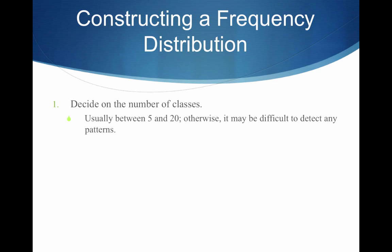How do we go about constructing a frequency distribution? Step 1 is to decide on the number of classes. I will usually give this to you — I'll ask you to construct a frequency distribution with, say, 5 classes or 8 classes. But if you have to decide on your own, typically we shoot for between 5 and 20, with 20 being for situations where we have a ton of data.